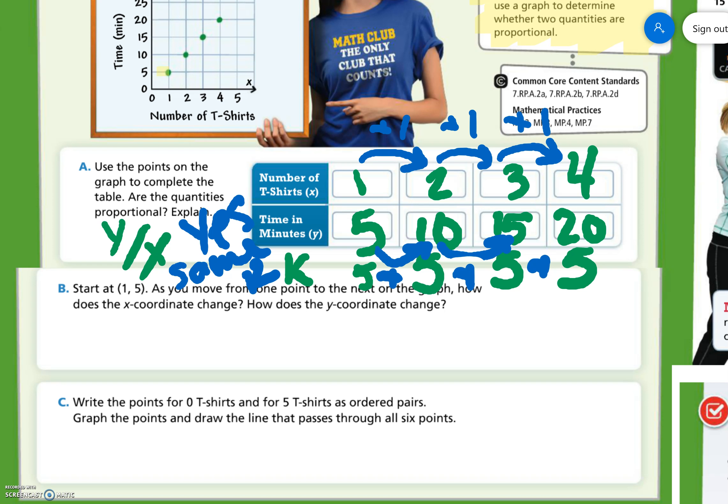Write the points for 0 t-shirts and for 5 t-shirts as ordered pairs. Well, if there are 0 t-shirts, it takes 0 minutes. If there are 5 t-shirts will follow the pattern, it would take 25 minutes.